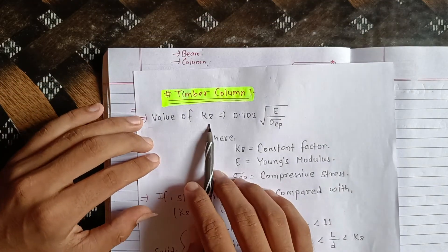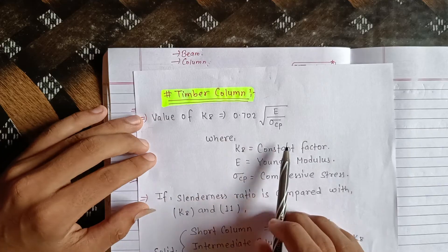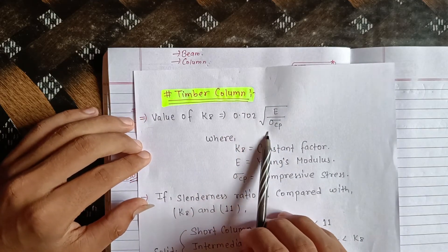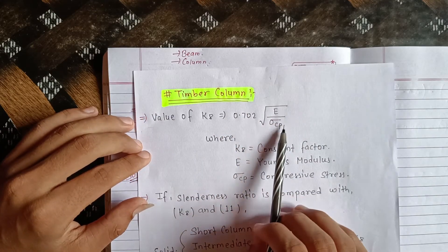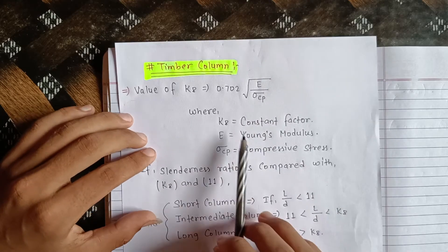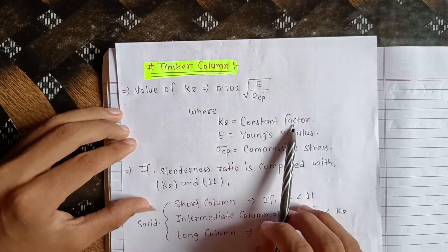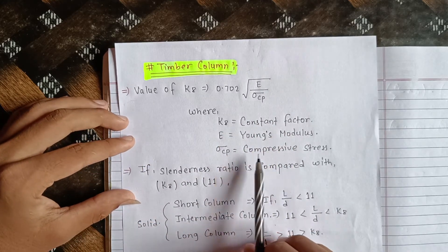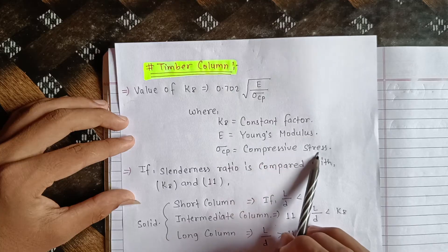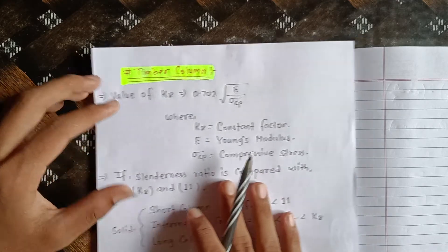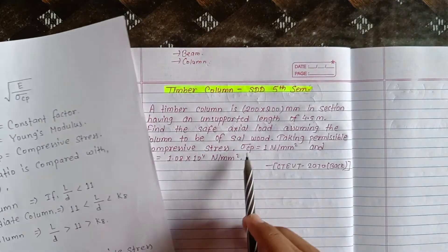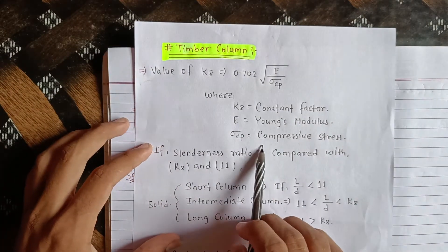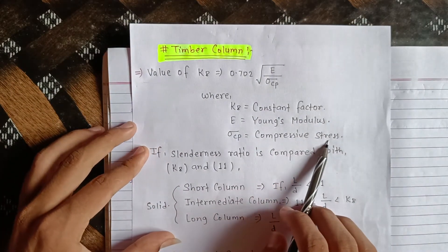First of all, calculate K8. The formula is: K8 = 0.702 × √(E / σcp). Here, K8 is a constant factor, E is Young's modulus, and σcp is compressive stress.